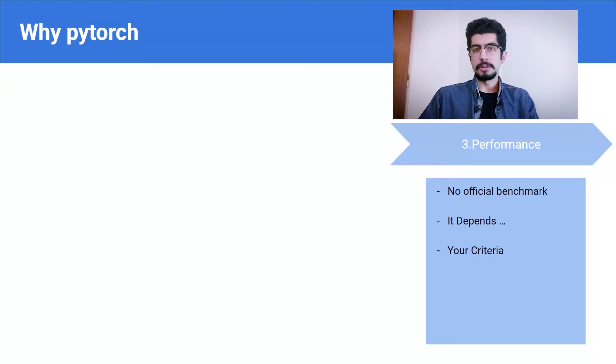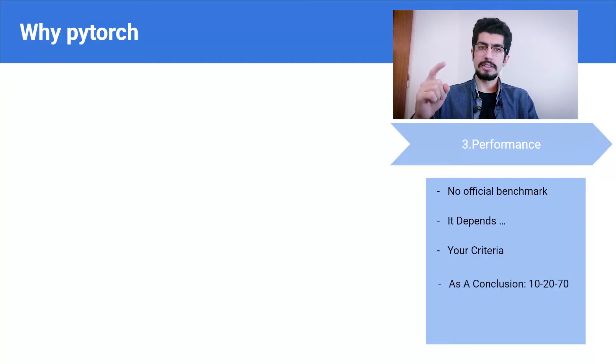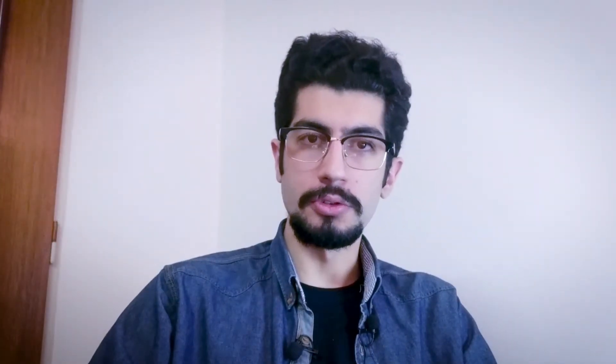It's a lot more complicated than just saying PyTorch is 10 times faster always. I came up with these numbers: 10%, 20%, and 70%. Ten percent of the time PyTorch is a bit slower, 20% of the time they are at the same level, and the other 70% PyTorch is about 1.5 times faster. With that said, that's the end of reason three.